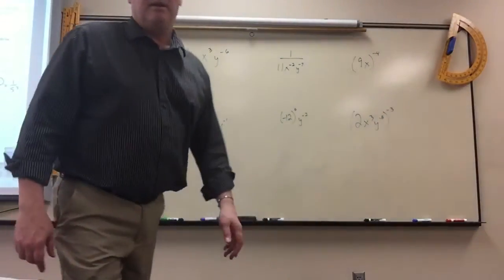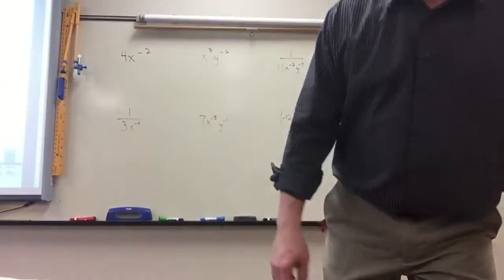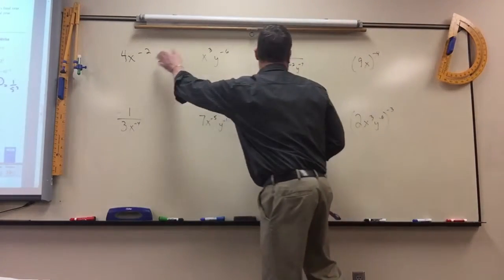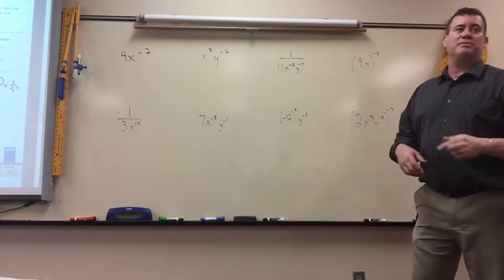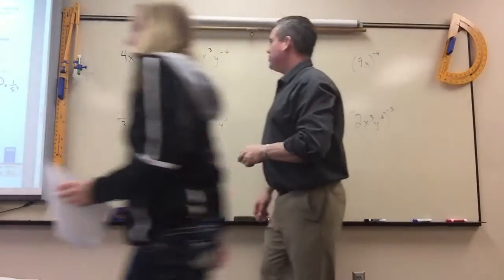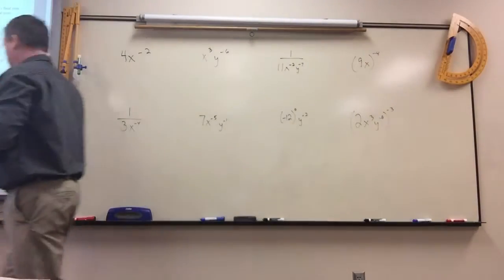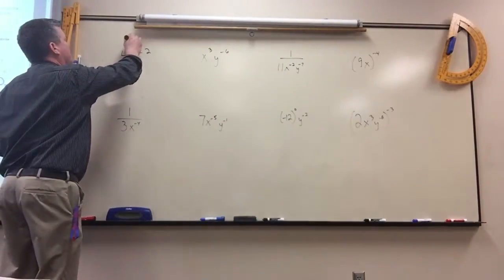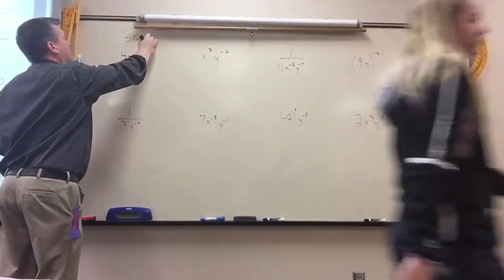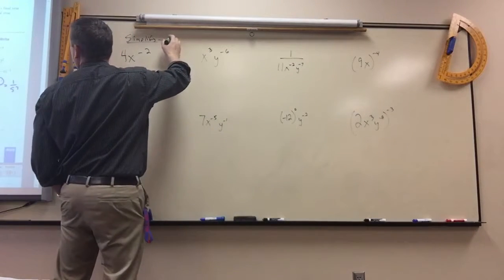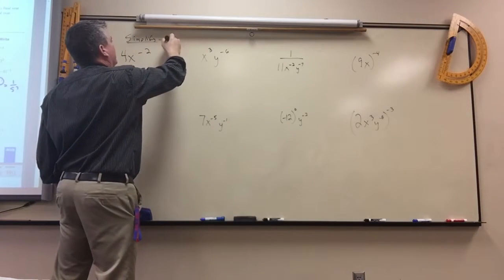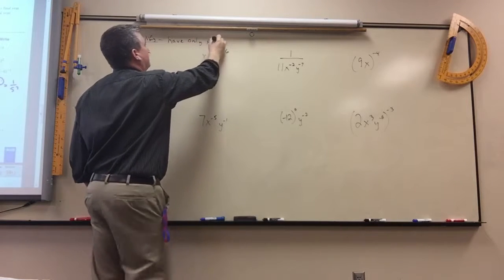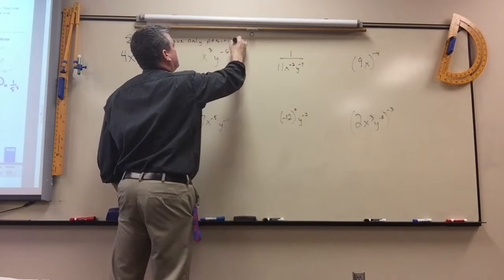Same section, just the ones that are a little more difficult. So again, it's dealing with negative exponents and zero exponents. They're just going to tell you to simplify these, and they want you to have only positive exponents.